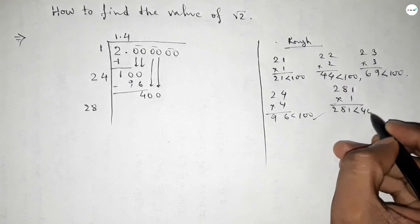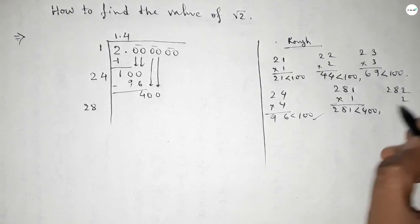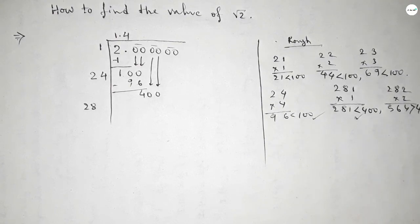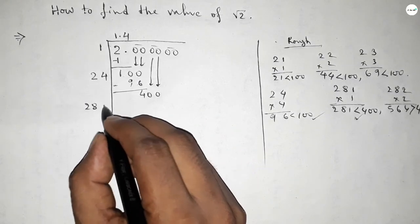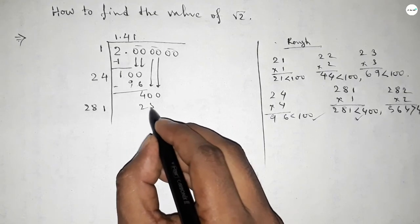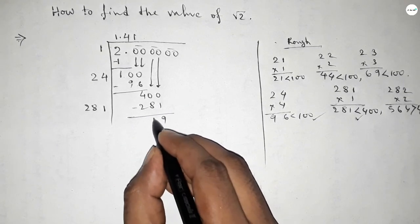Double of 14 equals 28. In similar ways, we put beside 28. If you put 1, then this is less than 400 but not almost 400. If you put 2, which is greater than... If you put here 1, then which is almost near 400.